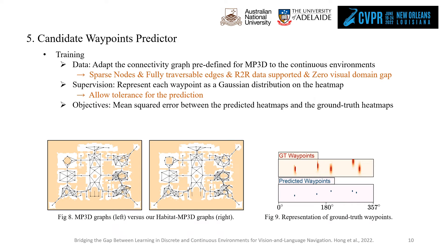To train the waypoint predictor, we first adapt the connectivity graph predefined for the Matterport 3D environment to the continuous environment, then represent each waypoint as a Gaussian distribution on the heat map, and minimize the mean square error between the predicted and the ground truth heat maps.